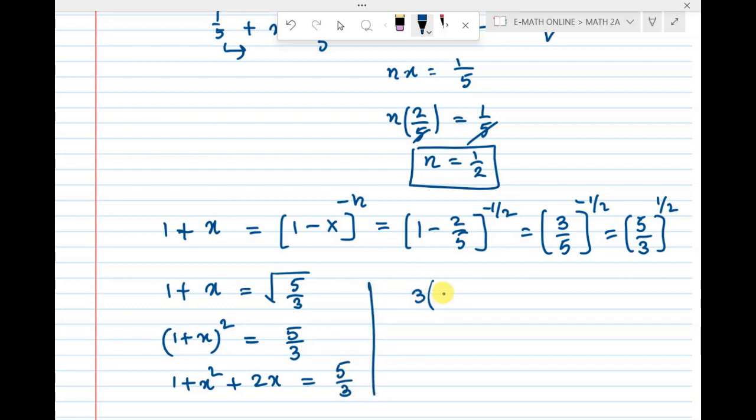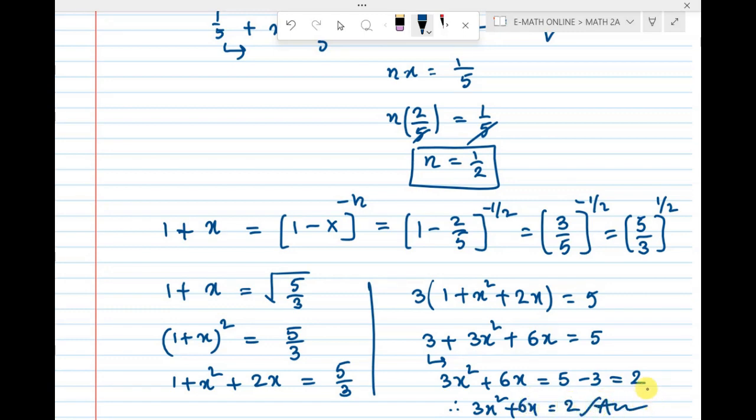1 plus x square plus 2x equal to 5 by 3. Cross multiply: 3 of 1 plus x square plus 2x equals 5. 3 plus 3x square plus 6x equals 5. Therefore, 3x square plus 6x equal to 5 minus 3, which is 2. This is the answer.